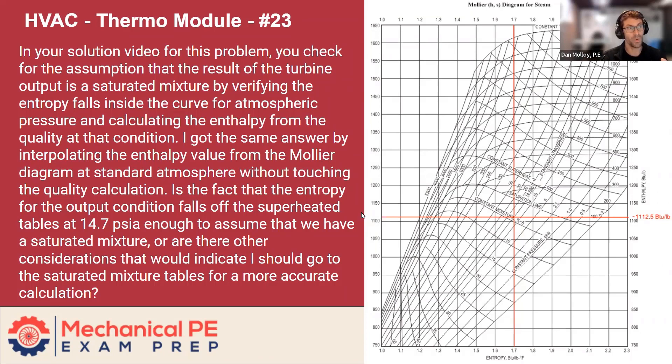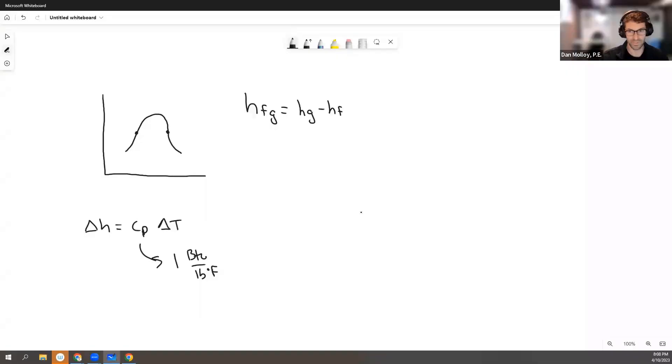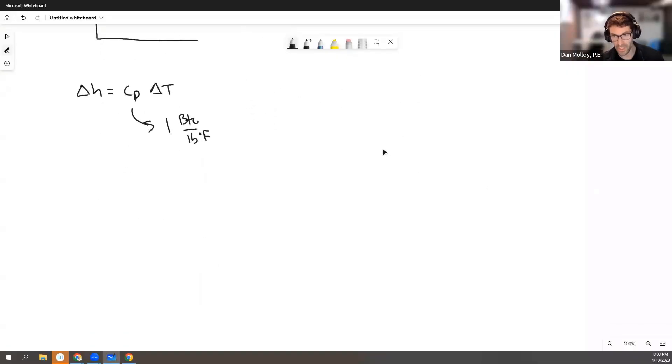And now if it's a saturated mixture, what's the quality of that mixture? Can we use the now known entropy and the boundaries? So let's be a little more specific. I'm not going to go into numbers, but just conceptually. In the steam table, we would be able to look up SF, SFG, and SG.